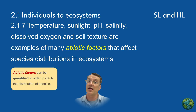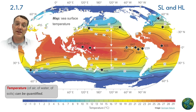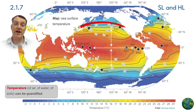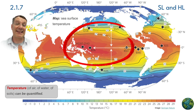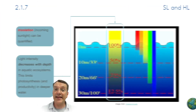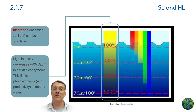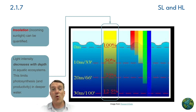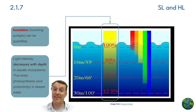Temperature is an important abiotic factor affecting species distribution, as demonstrated by sea surface temperature patterns globally — we find some species in warm areas and different species in cool areas. Light intensity also plays an important role in ecosystems, particularly in aquatic ecosystems where light levels decrease the deeper you go, limiting photosynthesis and the overall productivity of the system.